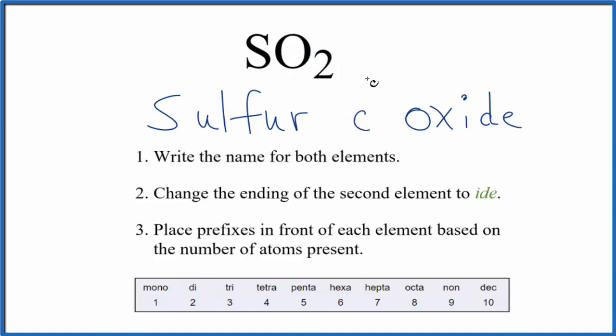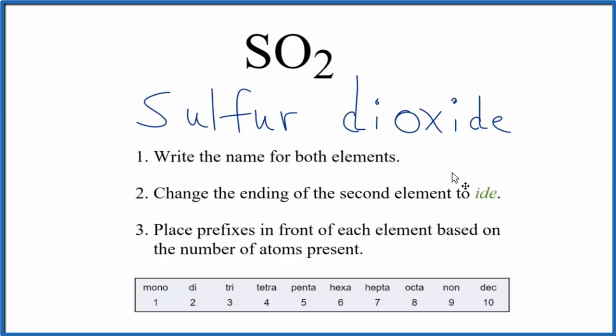So we write di, lowercase d, in front of the oxygen, the oxide here. So the name for SO2 is sulfur dioxide.